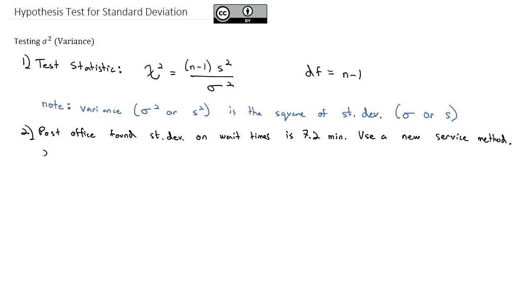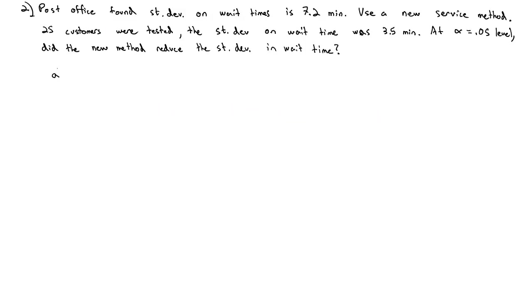Using this new service method, 25 customers were tested, and the standard deviation on wait time was 3.5 minutes. We want to know, at the α = 0.05 level, did the new method reduce the standard deviation in wait time?